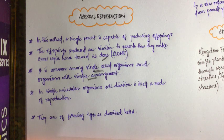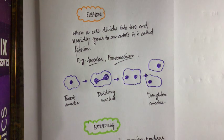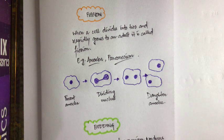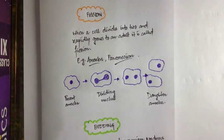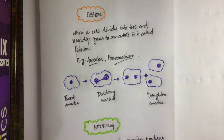Now asexual reproduction is of the following types. The first type is fission. Fission can be of different types: binary fission and multiple fission — we will discuss those later. When a single organism divides itself into two organisms and rapidly grows into an adult, it is called fission. When a single cell divides into two new cells and each of those cells develops into an adult very fast, that process is called fission.